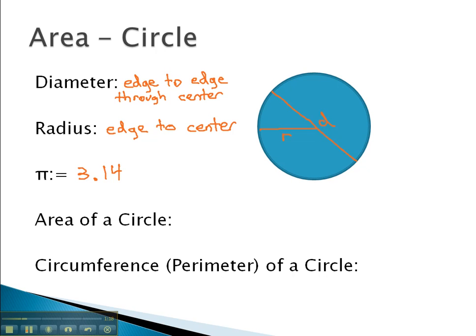And the way we find the area of a circle is we're going to use a formula that is pi, or 3.14, times the radius squared.